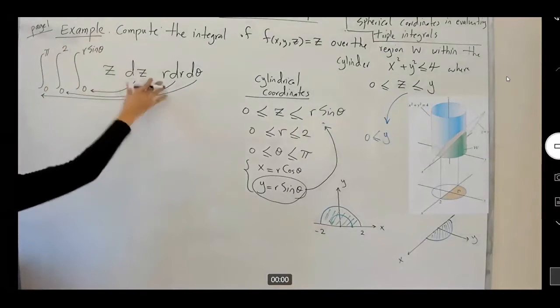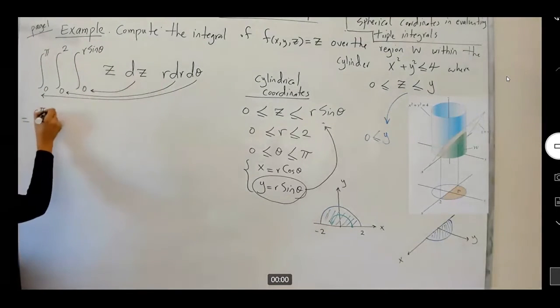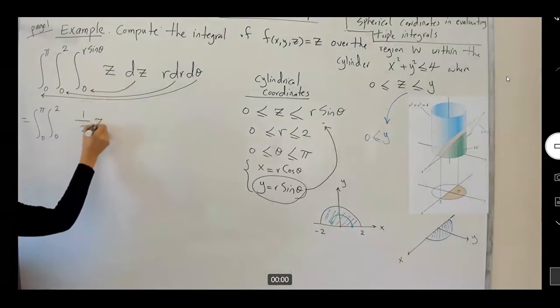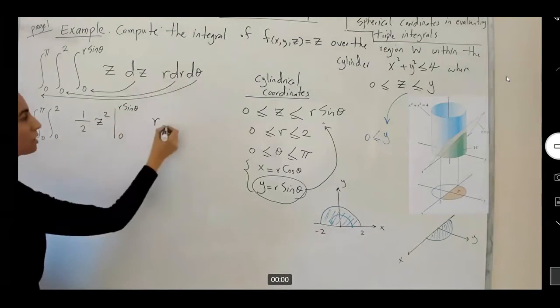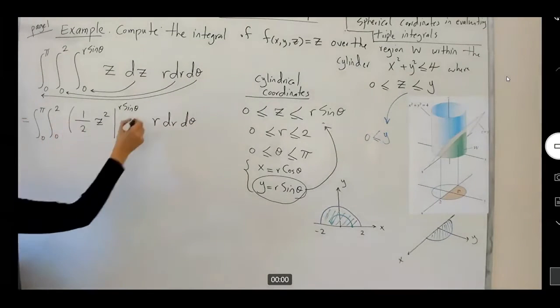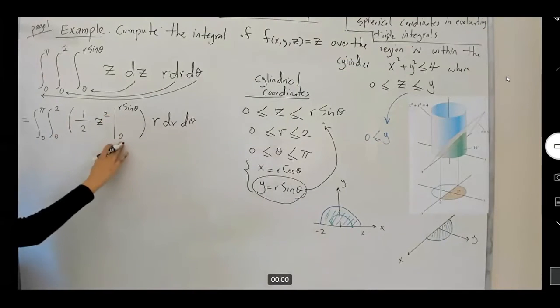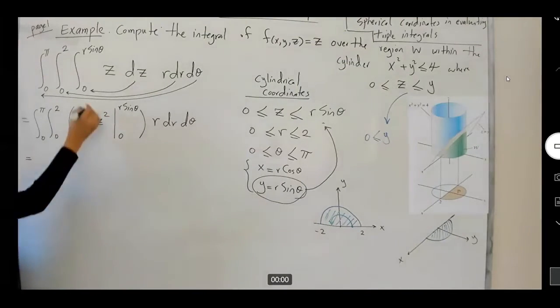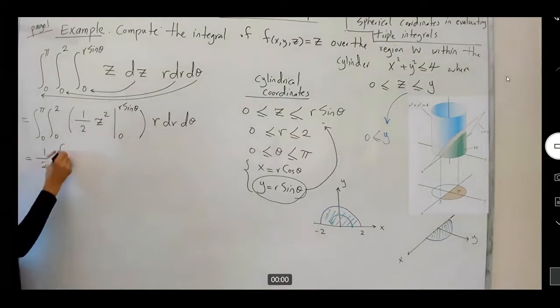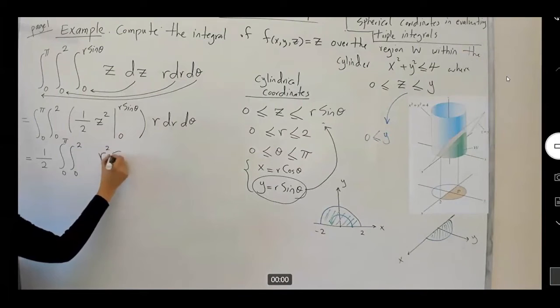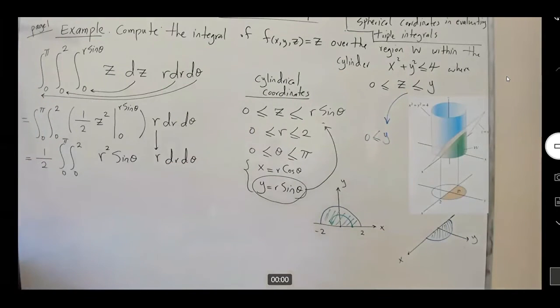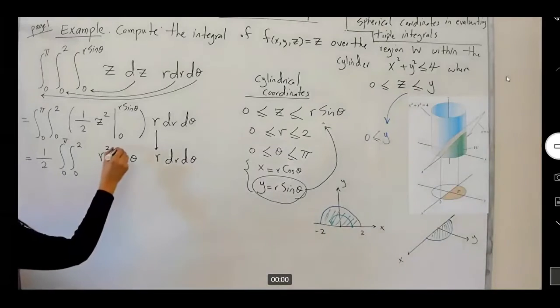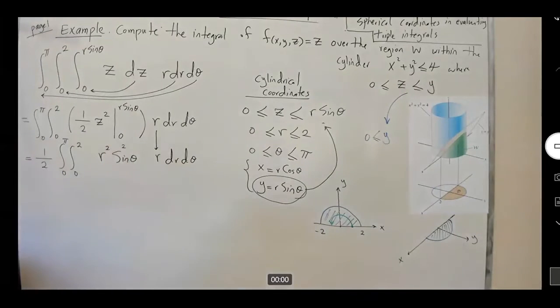So, let's calculate the innermost integral. Here you have equal to 0 to π, 0 to 2. I have a half z squared, 0 to r sine theta. Note that I have r, don't forget about this r, dr dθ. So, let's substitute r sine theta. I'm not worried about 0 because the outcome is equal to 0. And I'm going to take this a half scalar and write it in front of my integral. 0 to π, 0 to 2. And z squared gives you r squared sine squared theta. I'm going to copy down my r, r, dr, dθ.